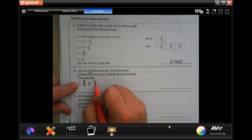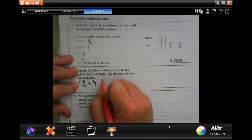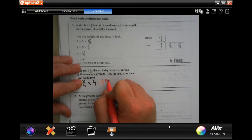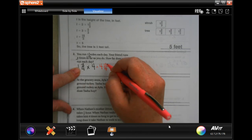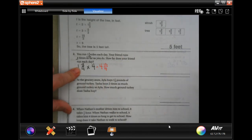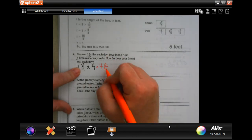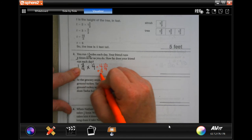So, four times one is four. Four times three is twelve, and then I keep my denominator. Now, you'll notice that twelve is bigger than four, so I need to go four percent of twelve three times.